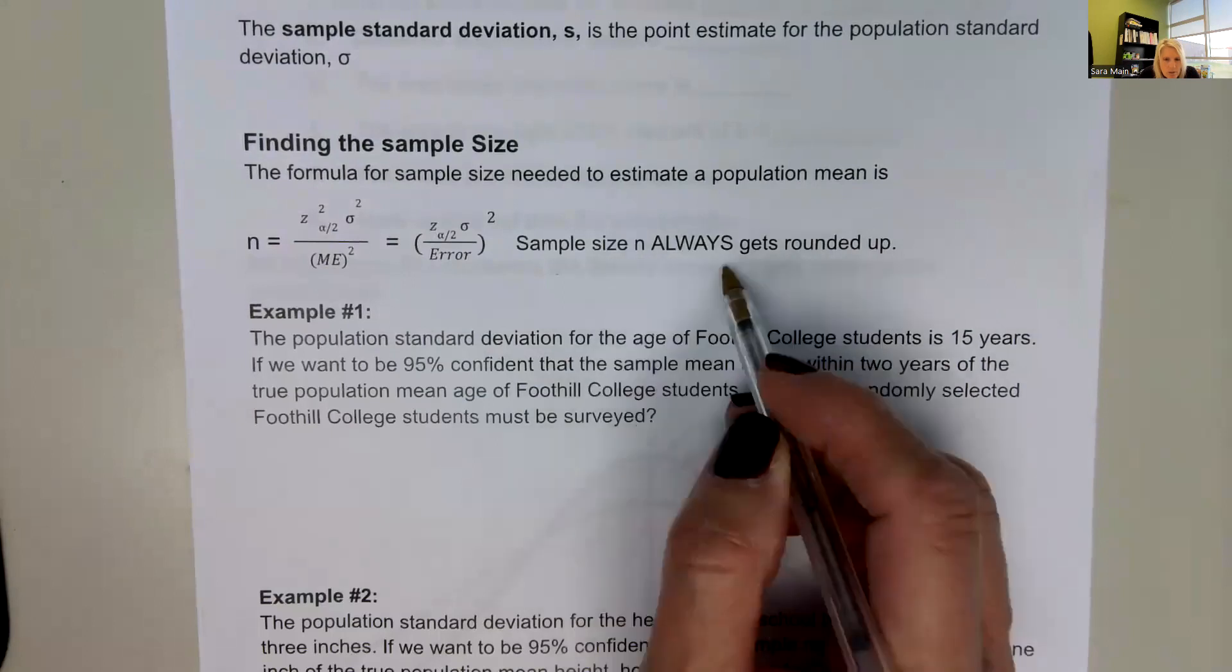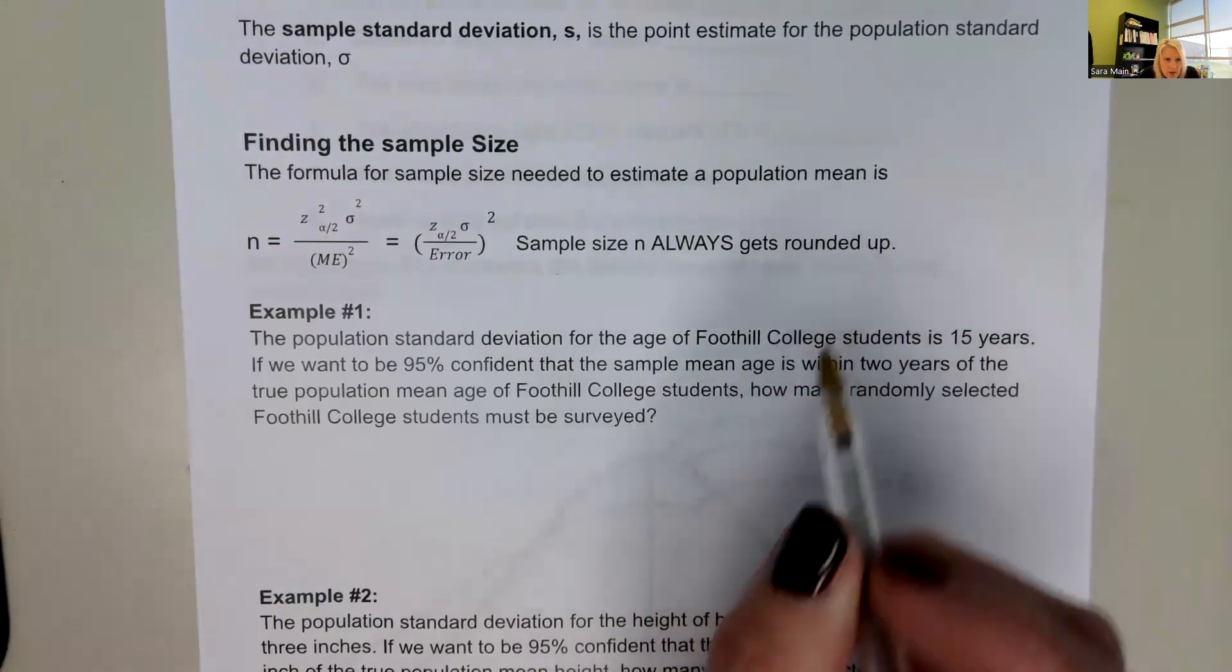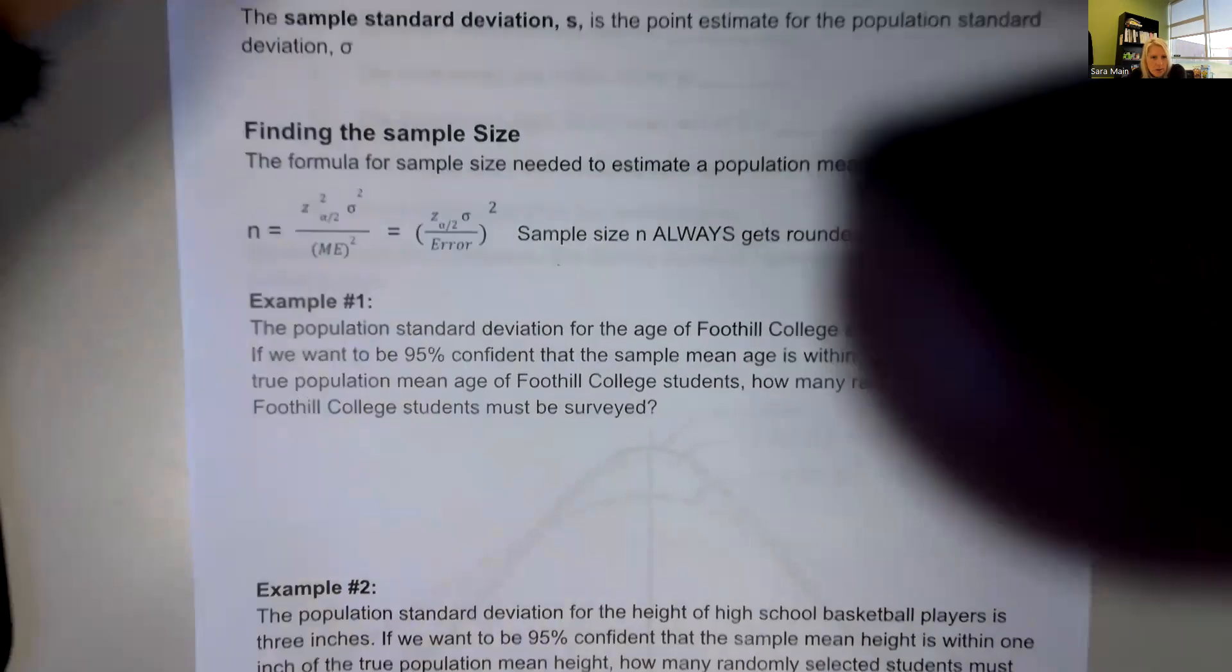And always, always, always, we always round up to the nearest integer for sample size. So let's go ahead and look at a couple examples.